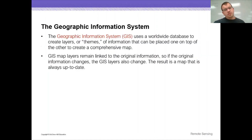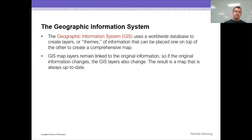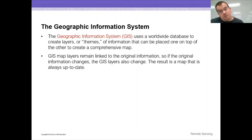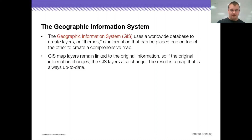Then we have Geographic Information Systems — GIS. This is a worldwide database used to create layers or themes of information that can be placed one on top of the other to create a comprehensive map. The GIS map layers remain linked to the original information, so when the original information changes, the GIS layers also change. The result is a map that is always up to date, which is important given how continually our lives are changing.